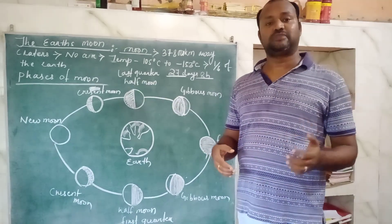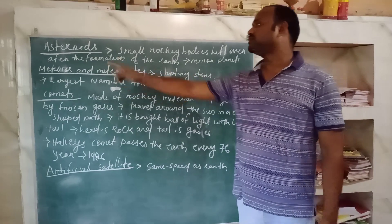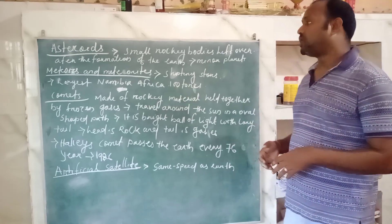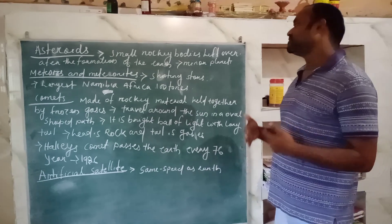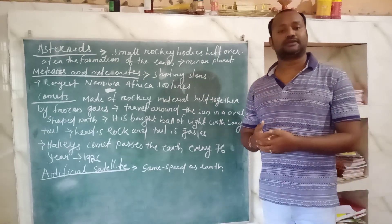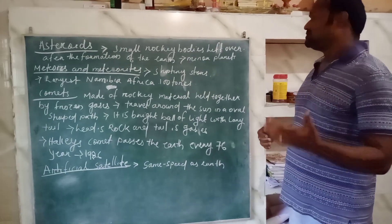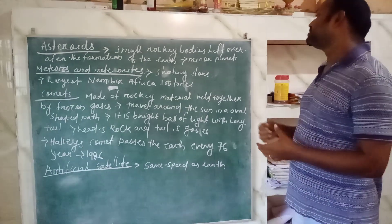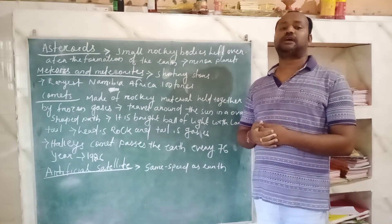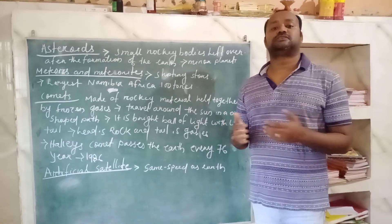Now we are going to read about asteroids. Asteroids are small rocky bodies which are left over after the formation of the planets. They are also known as minor planets. Asteroids are mostly found between Mars and Jupiter, which is the major asteroid belt in the solar system, where numerous asteroids orbit around the sun.